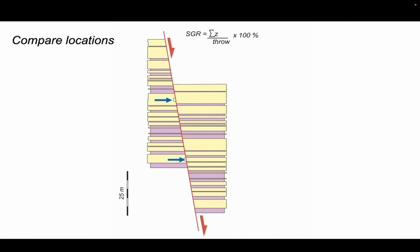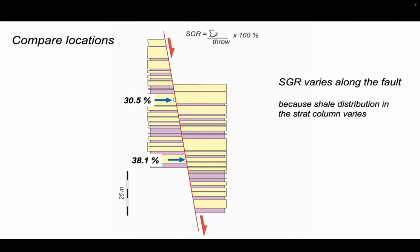In comparing our two locations, we see that the shale gouge ratio varies along the fault. This is because the shale distribution, the sum of the thicknesses, varies through the stratigraphic column.